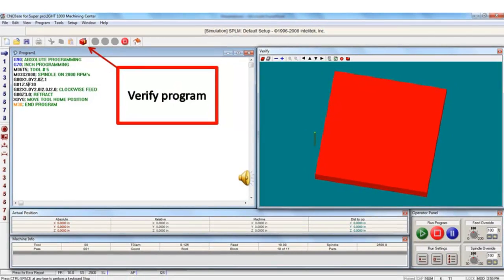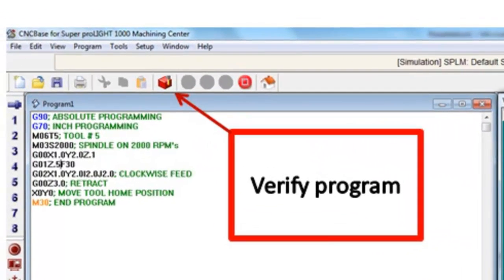Now, before we take the CNC program to the machine, it would be a good idea to do a simulation. This is done using the verify program icon.